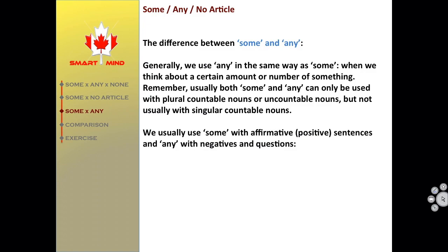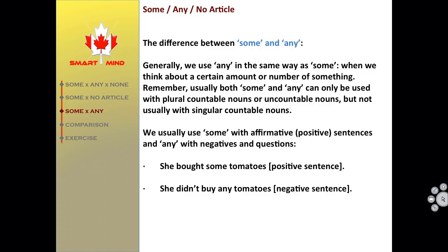We usually use some with affirmative positive sentences and any with negatives and questions. For example: 'She bought some tomatoes.' (positive sentence) 'She didn't buy any tomatoes.' (negative sentence) 'Did she buy any tomatoes?' (question)